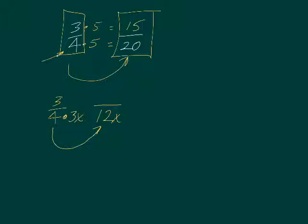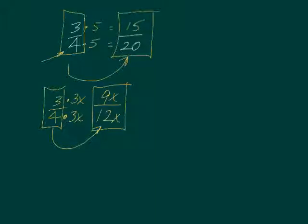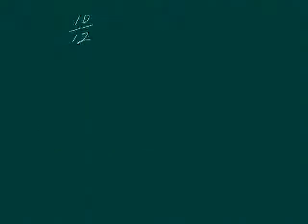So let's say that I have a 3 fourths and I want you to write an equivalent fraction with a denominator of 12x. So I had to go from 4 to 12x. Well, in the last chapter, we learned about multiplying numbers with letters. And if I multiply this 4 times 3x, what does that mean? It means I multiply the 4 times the 3 and I can't do anything with the x except drag it along with me. So 4 times 3 is 12 and the x gets dragged along.